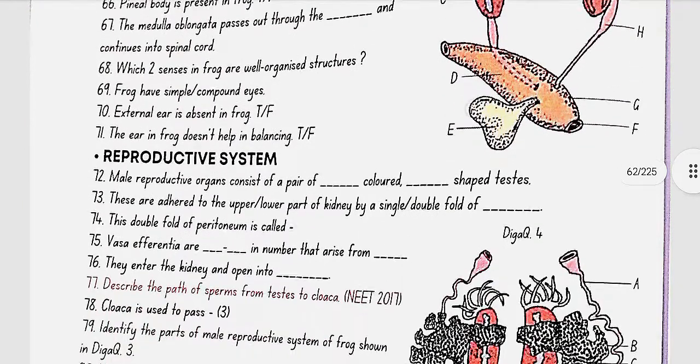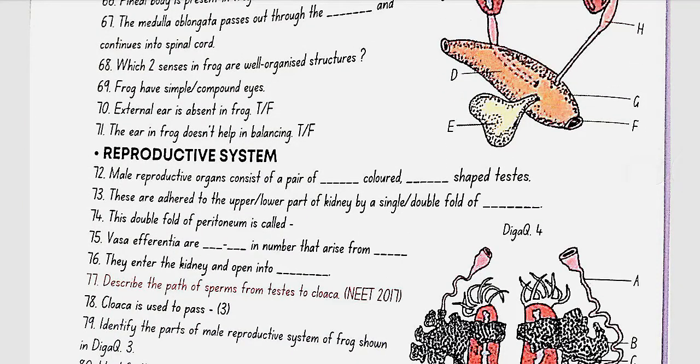Which two senses in frogs are well organized structures? Eyes and internal ears. Frog have simple or compound eyes. So, they have simple eyes. External ear is absent in frog. Yes, true. The ear in frog doesn't help in balancing. No, this is false.